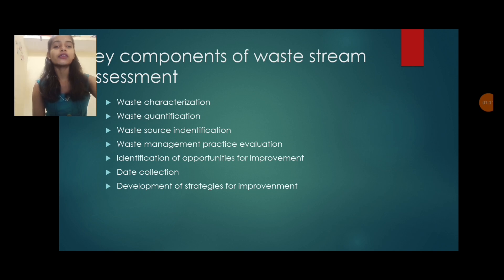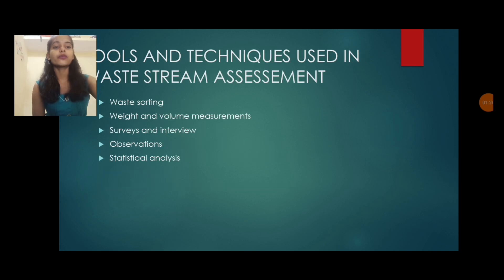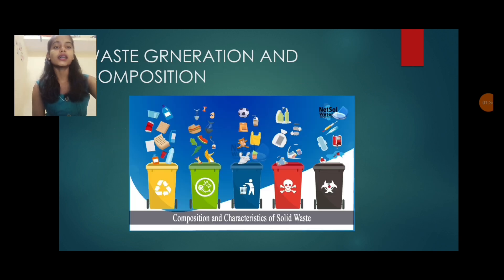Key components of the waste stream assessment include: waste characterization, waste quantification, waste source identification, waste management practice evaluation, identification of opportunities for improvement, data collection, and development of strategies for improvement. Tools and techniques used in waste stream assessment include waste sorting, weight and volume measurements, surveys and interviews, observation, and statistical analysis.